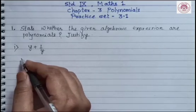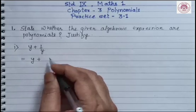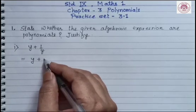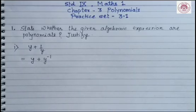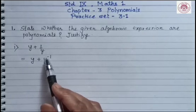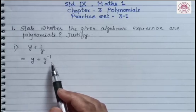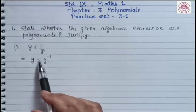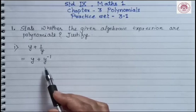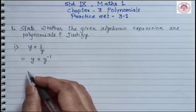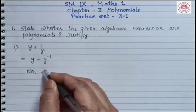Now y plus 1 by y can be written as y plus y to the power negative 1. As the power of y is negative 1, that is it is not a whole number, and therefore the given algebraic expression is not a polynomial.